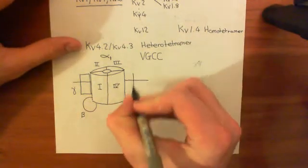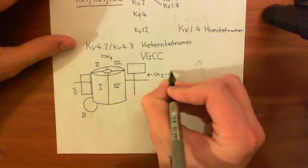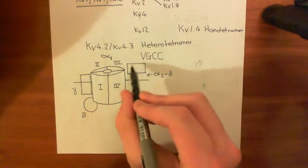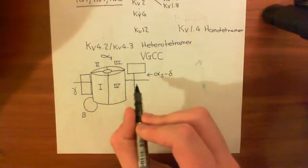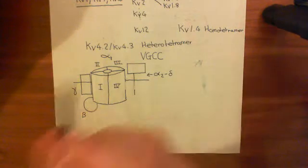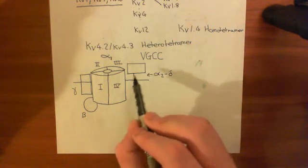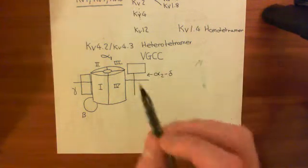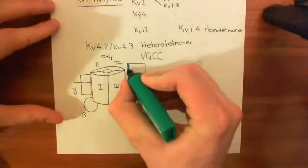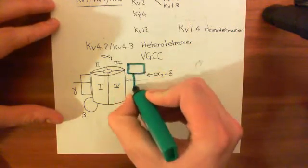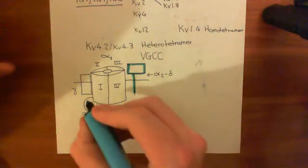Finally, there's another subunit called the alpha-2 delta subunit, which is really made up of two portions: the alpha-2 subunit and the delta subunit, connected by disulfide bonds. Complicatedly, it's actually made by one gene — one gene makes one protein, and then that protein is cleaved into two portions, the alpha-2 and the delta, and then they rejoin in a different way. The delta subunit is the membrane-spanning stick, and the alpha-2 subunit is the extracellular portion at the top.